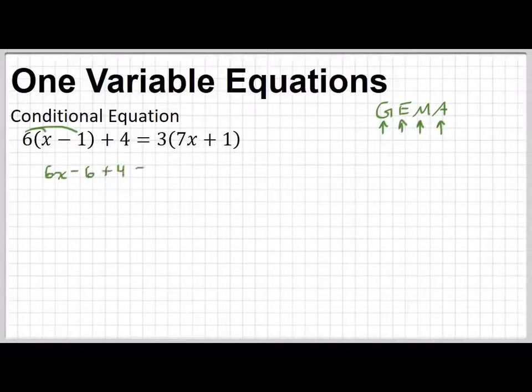plus 4, equals. And then on this side we go 3 times 7, which would be 21x, and then 3 times 1, which would be 3.